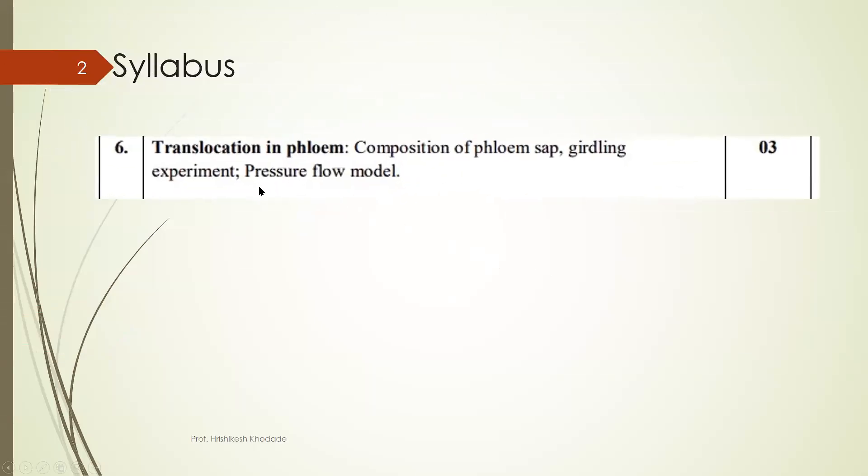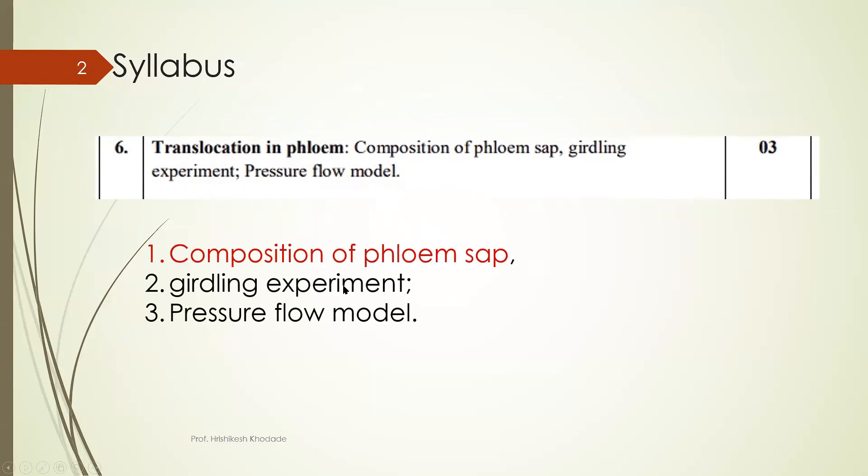Syllabus is translocation in phloem in which points are given such as composition of phloem sap, girdling experiment and pressure flow model. So these three points are given and we are going to explore each and every point in detail with respect to exam.